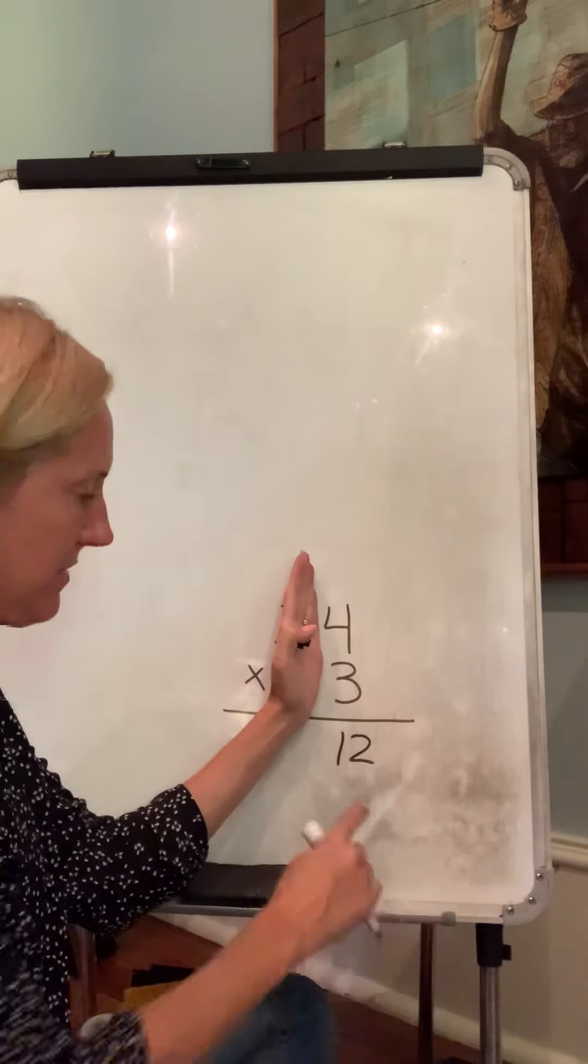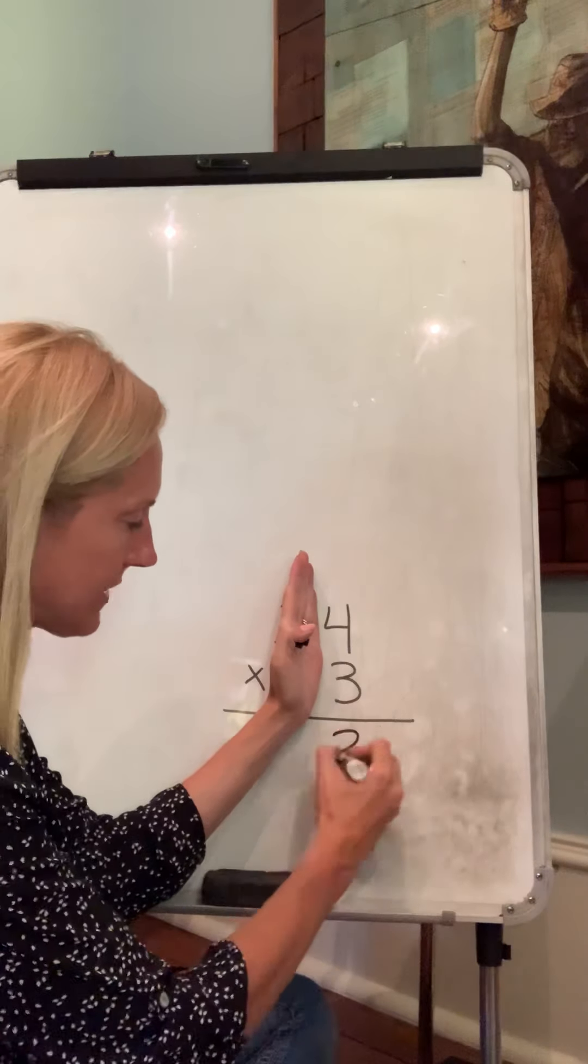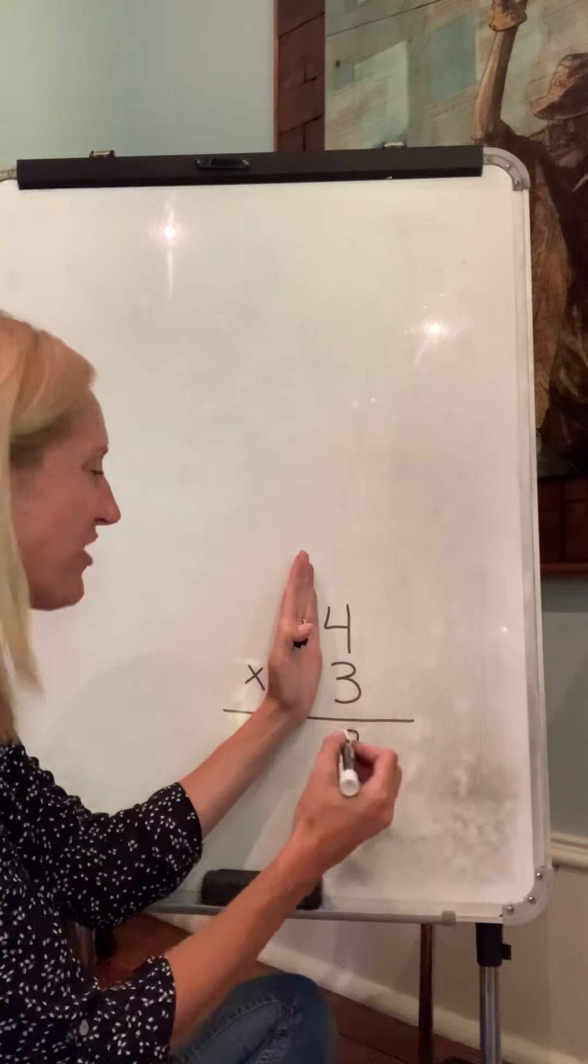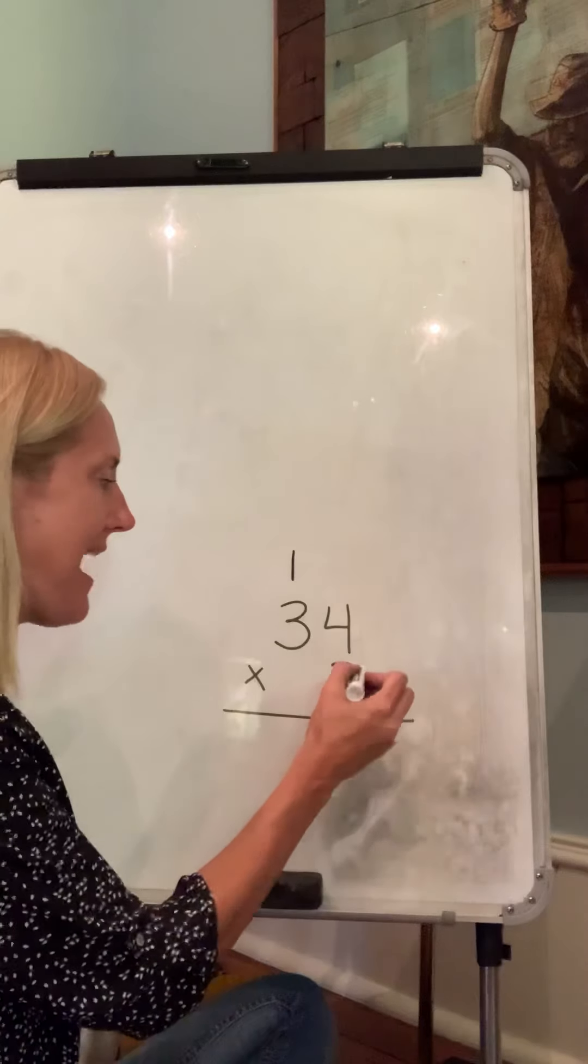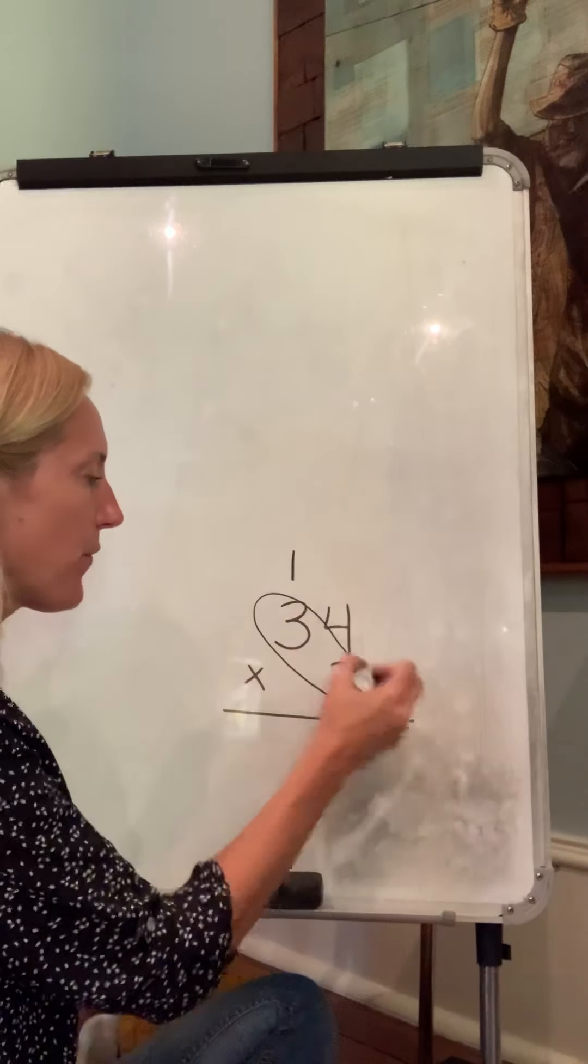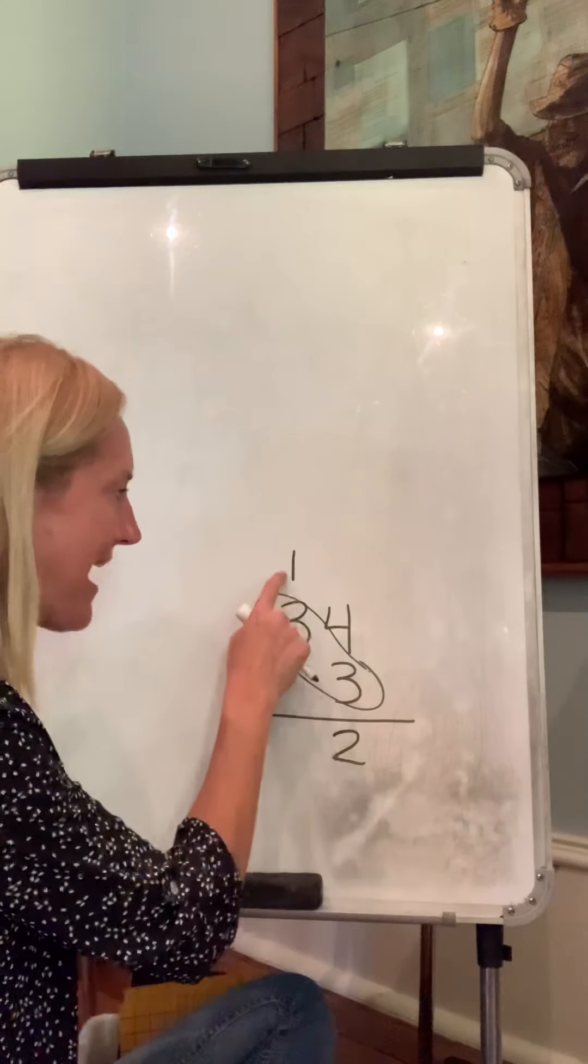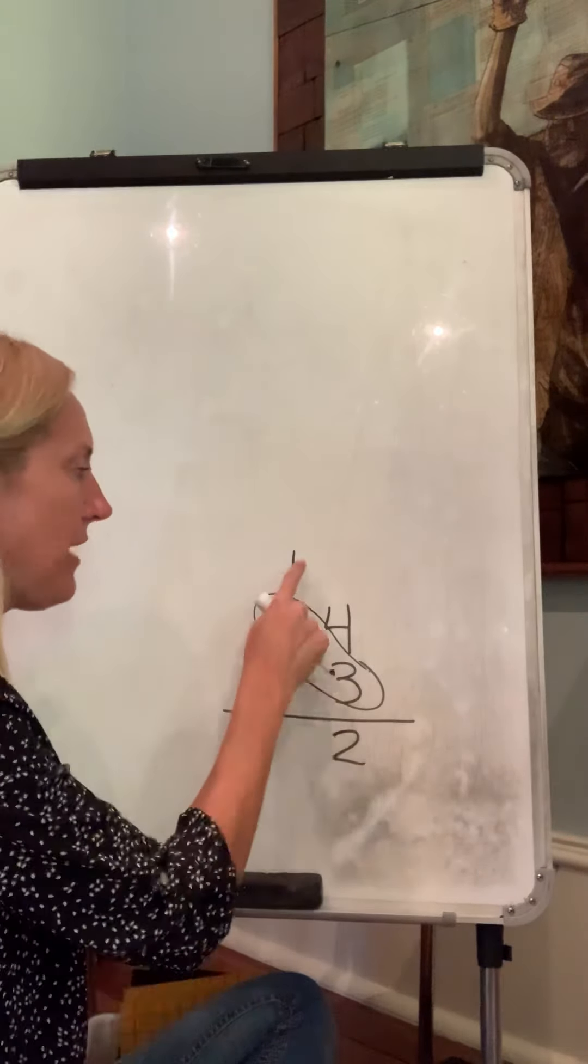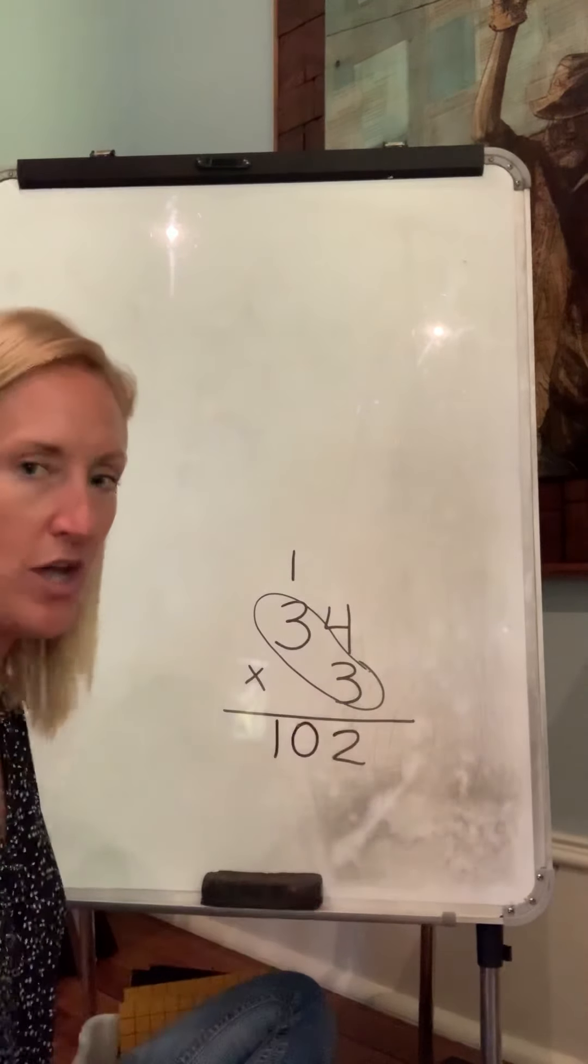I can't put twelve here. I can put my two for my ones, because this is the ones area. But that one digit for twelve is actually a ten, so it needs to go up here with the tens. Now we're going to do three times three. Three times three is nine. But we have this extra ten that we just got, so we have nine plus the one is ten. One hundred two.